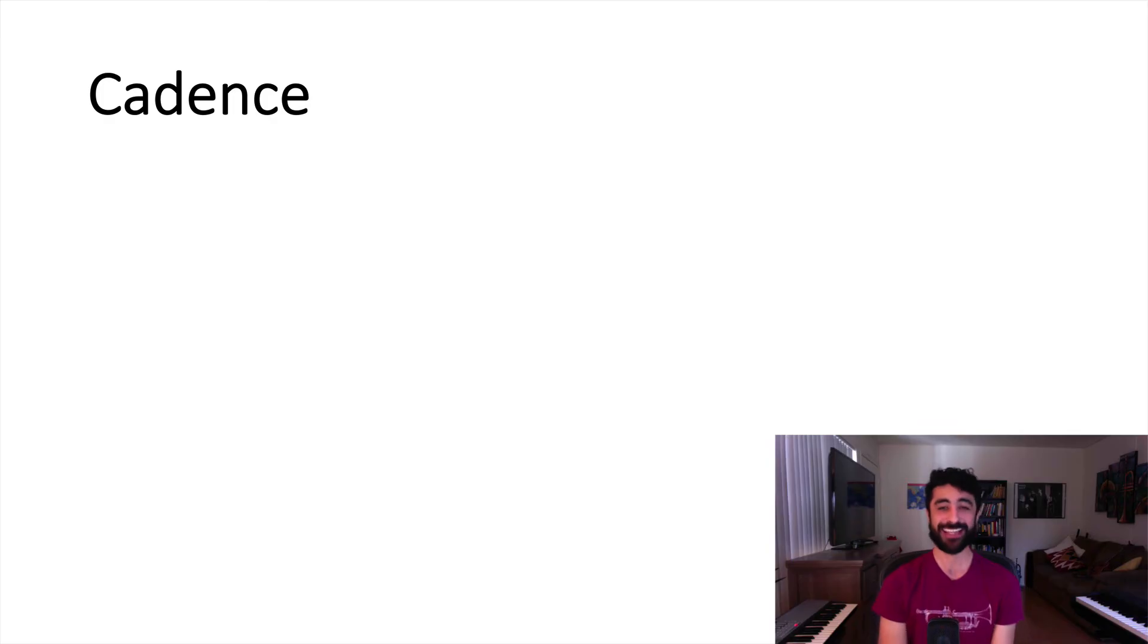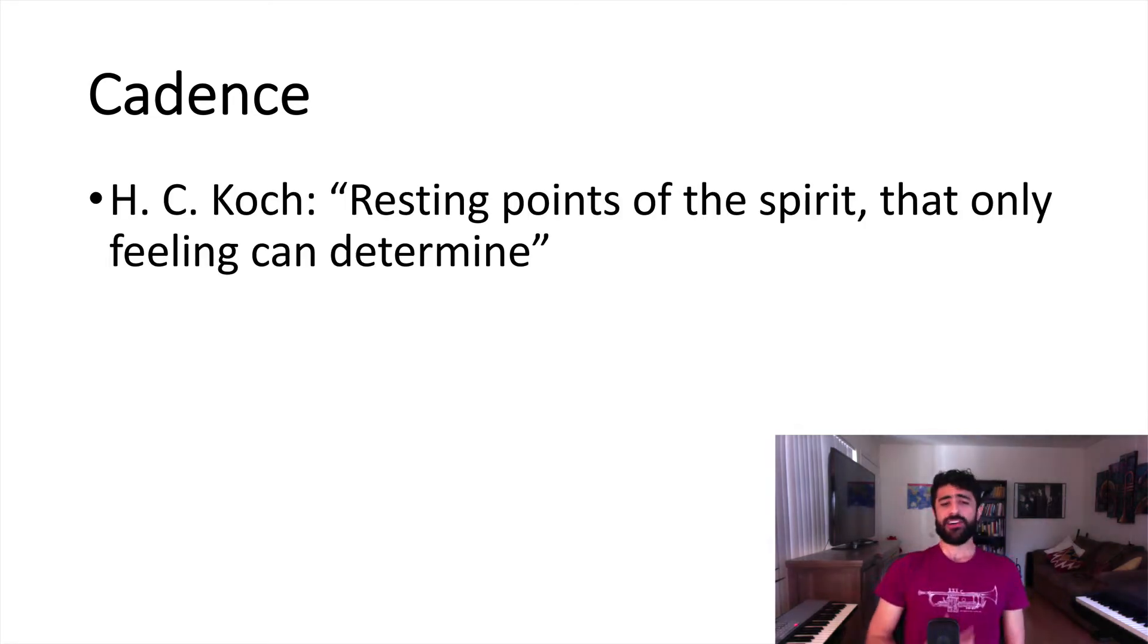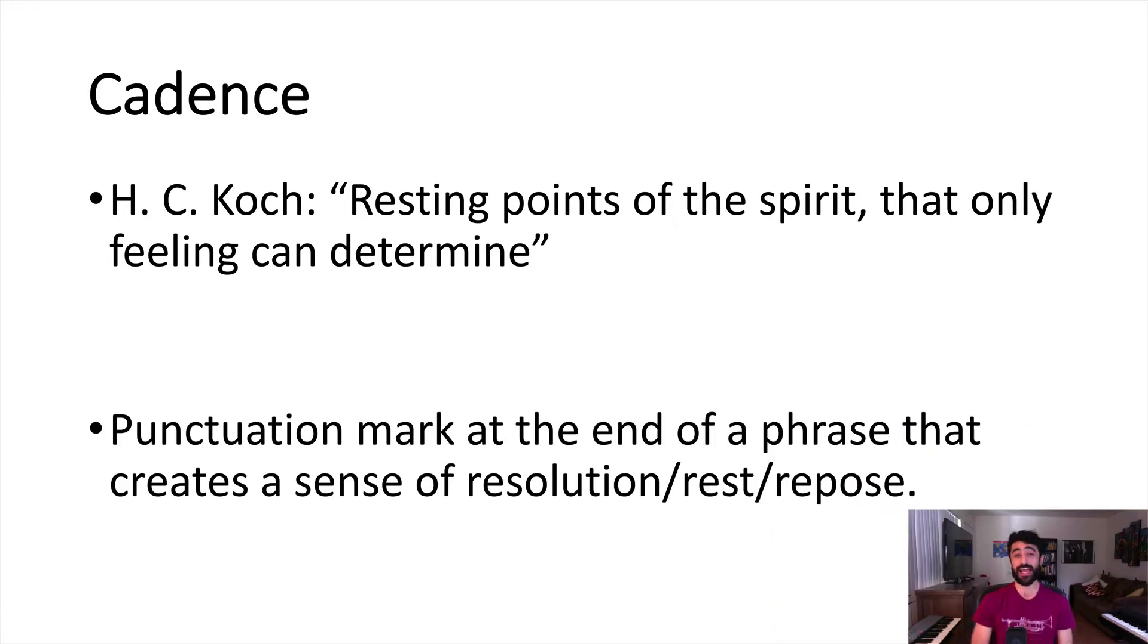The second concept that we're going to talk about is cadence, which is something that you also studied in your theory sequence, but it'll be good to go a little further into it. What is a cadence? One definition that I like was given by Heinrich Christoph Koch, who was a German theorist contemporary of Mozart and Haydn. He said that cadences are resting points of the spirit that only feeling can determine, which I love. It's a very poetic definition. If you want to go a little further, we can say that a cadence is like a punctuation mark at the end of a segment of music that we're going to call a phrase, that creates a sense of resolution, of completion, of rest, of repose. Let me play for you a couple of examples of this.